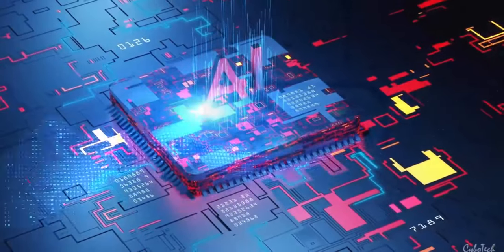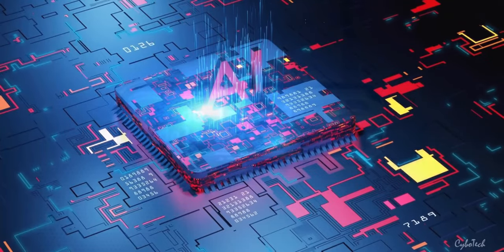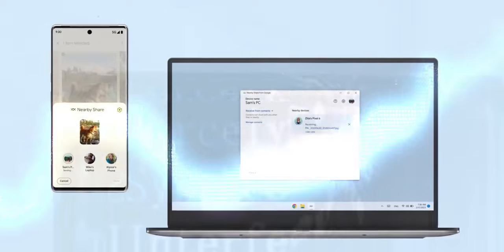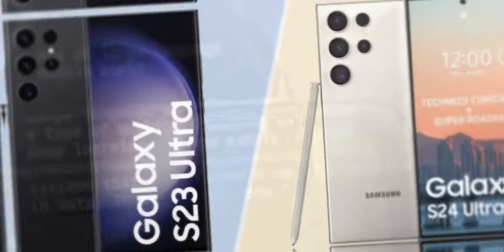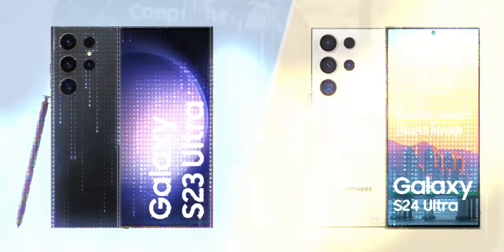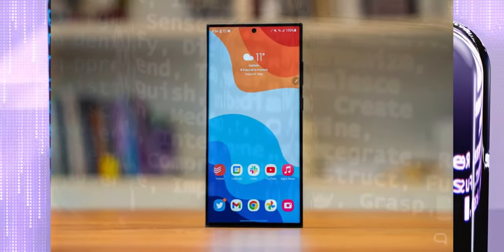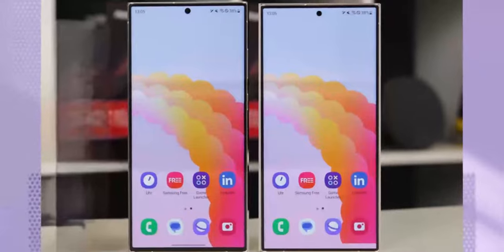Samsung is set to reveal its most advanced phone yet, the Galaxy S24 Ultra, on January 17th, alongside the S24 and S24+. The Galaxy S24 Ultra will be the third iteration to use the Galaxy S22 Ultra shell, but with significant improvements in various aspects.